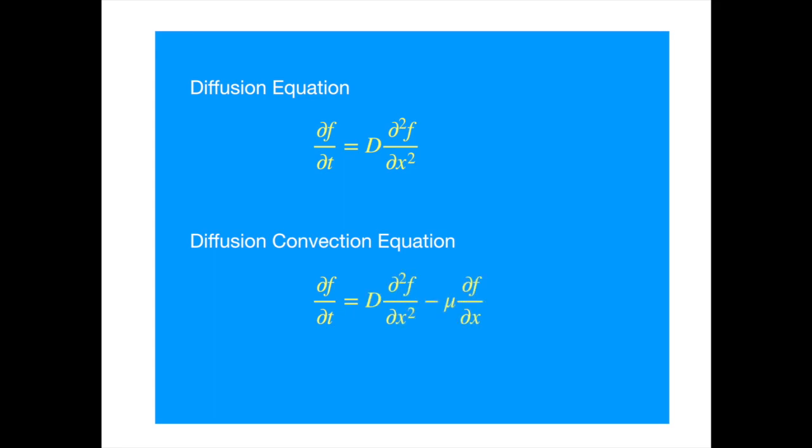Previously we had the Brownian particles moving about because of bombardments by the molecules of the liquid. Now we assume that there is some force acting on the system such as currents or gravity, or you can assume that the medium in which the particles are suspended is flowing. So the particles will move about as in the diffusion, but now they have a preferred direction as well because of the convection or the drift.